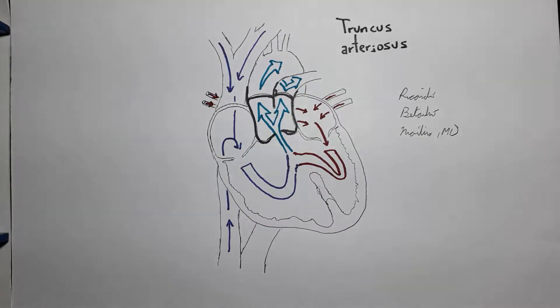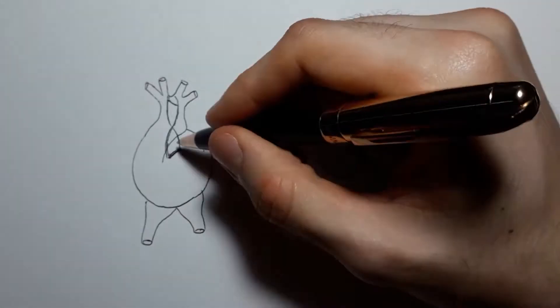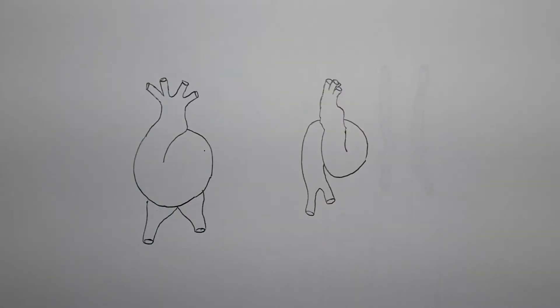This naturally leads to the obvious question: What if the aortic pulmonary septum develops, but it does not spiral? Rather, what if it develops in a linear way?